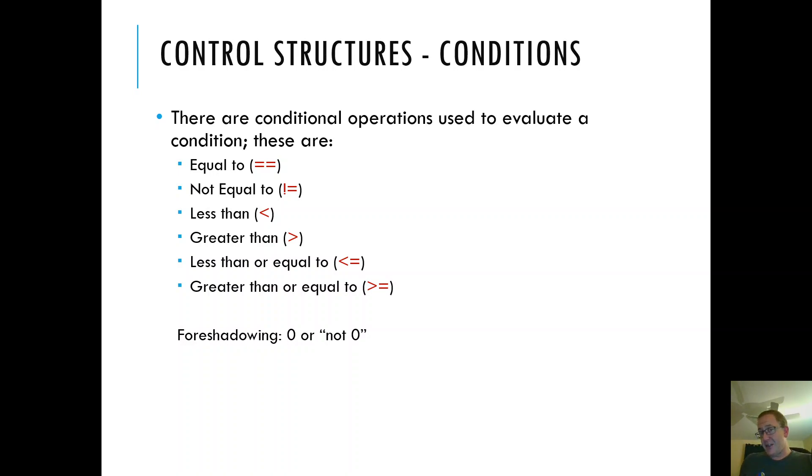A condition in C is either it's true or it's false. It's either zero meaning false or not zero. Yeah. There is no true or false variable in C.